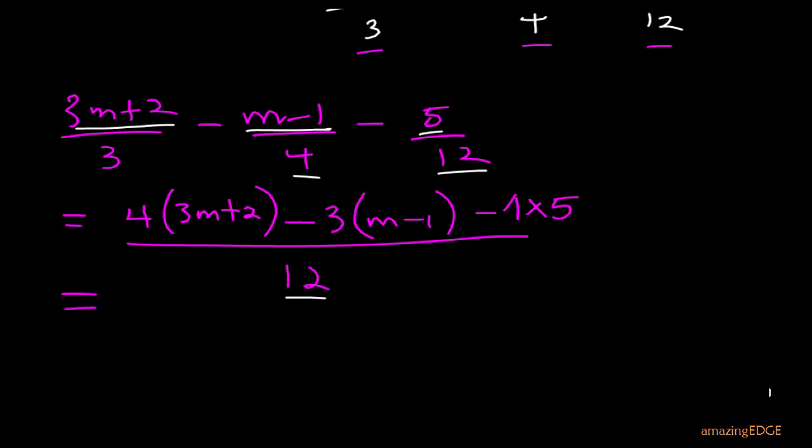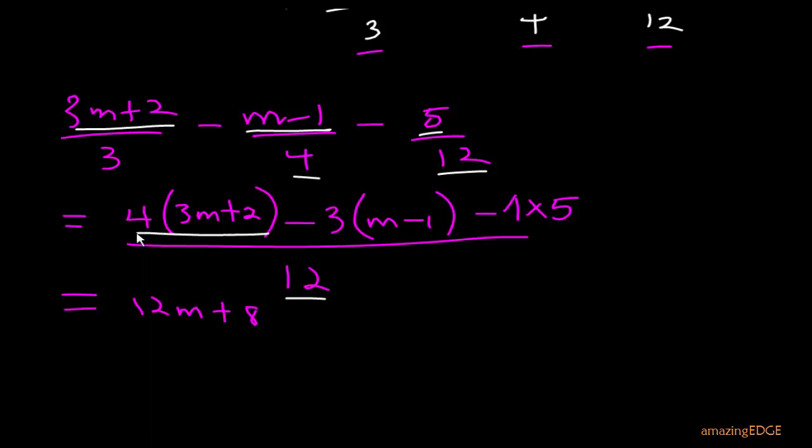So we start with 4. So 4 times 3m, will give us 12m. Then plus 4 times 2, will give us 8. Now we are done with this first part of the bracket. So the next one is to consider this one now. So recall, we put our minus.